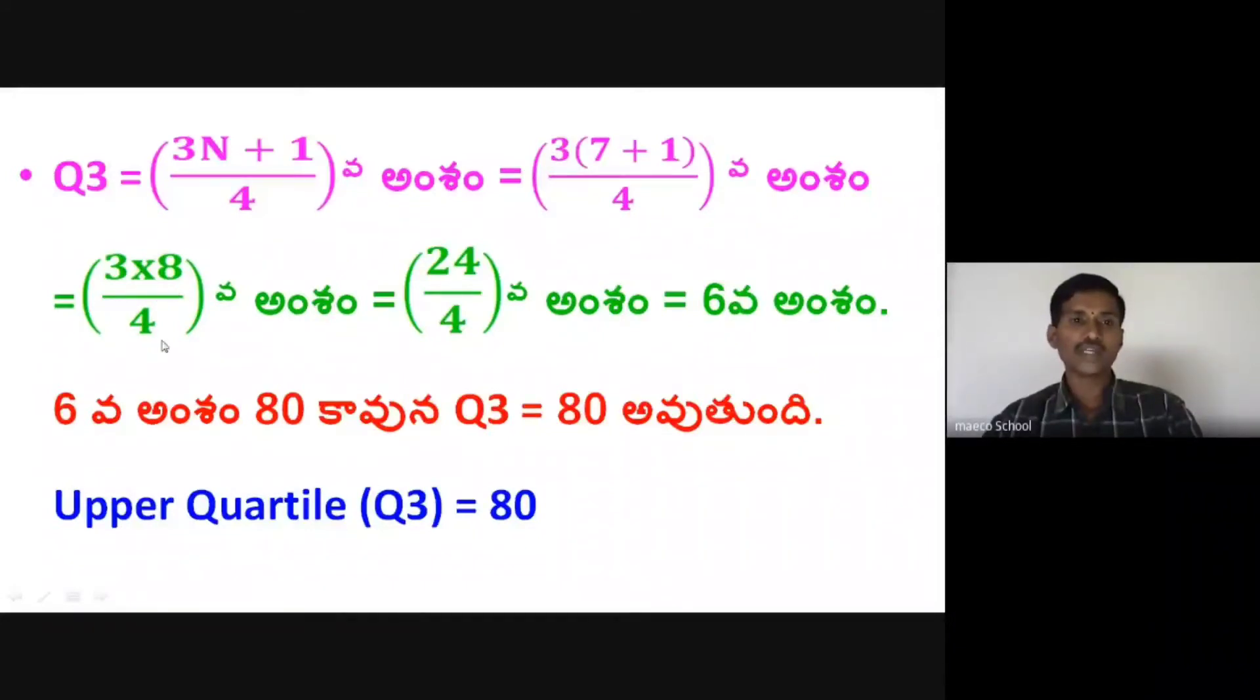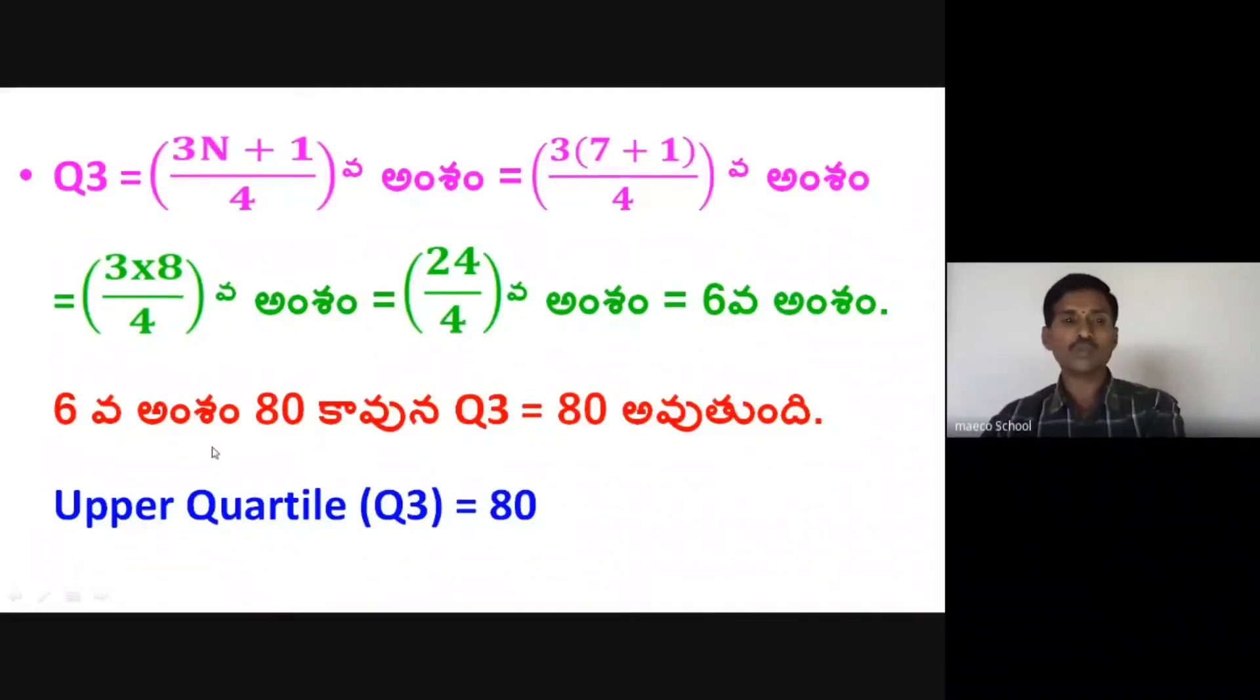3 times 8 equals 24. So we get 24 by 4th item. The size of 24 by 4th item is 6. So Q3 is the 6th item.